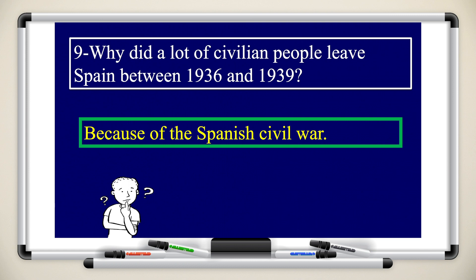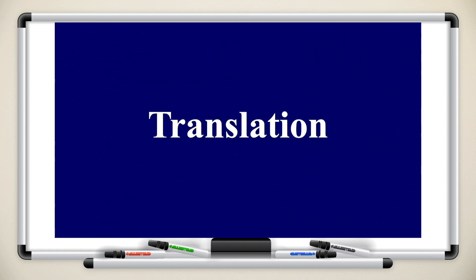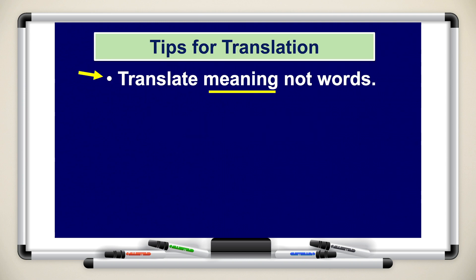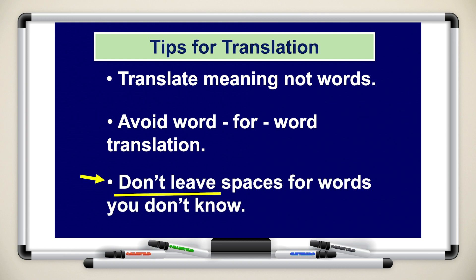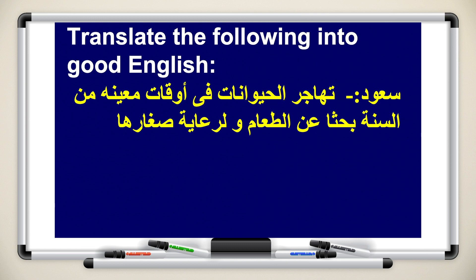That was the reading comprehension — it was pretty easy. Let's now start doing the translation. Here are a few tips for translation: focus on translating meaning, not words. You have to understand the sentence and translate the meaning of the sentence. Avoid word-for-word translation. Don't leave spaces for words you don't know — we don't want to see a sentence with spaces in between. Write it as a full sentence. Now we will translate these sentences.